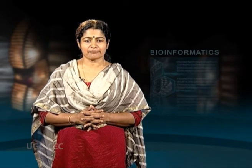Ab initio methods. Procedures utilizing properties of the DNA sequence alone in order to predict locations of genes are termed ab initio methods and may additionally incorporate information from homologous regions of related genomes. Ab initio methods utilize only intrinsic properties of the DNA sequence itself. An alternative to ab initio gene finding is to incorporate expression information such as ESTs, cDNAs or tiling arrays, termed extrinsic information. Ab initio gene prediction is an intrinsic method based on gene content and signal detection.